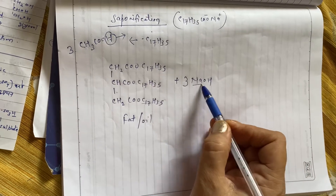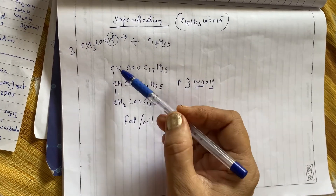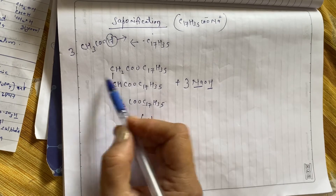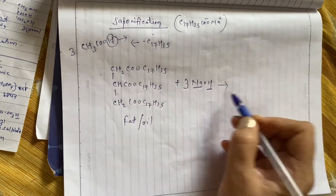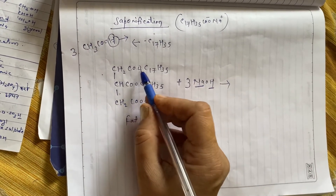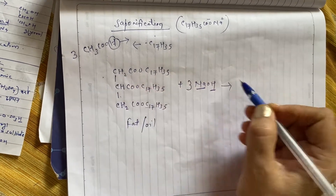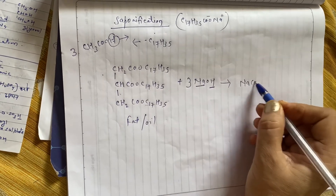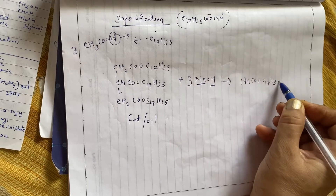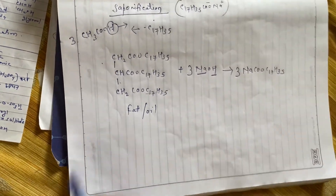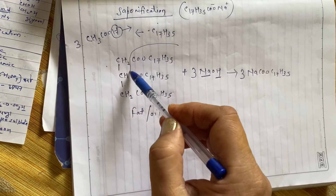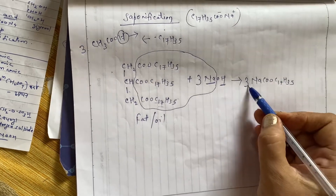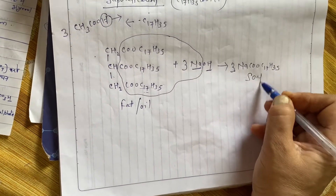Jab dono reaction karenge to dekho: teen sodium hai aur teen OH group hai. Yeh OH group aakar ek idhar, ek idhar, ek idhar lug jayega, aur woh glycerol mein convert ho jayega. Aur jo remove hua hai uski jagah sodium lug jayega. To bana kya? COO C17H35 aur sodium — aise teen particles. Yeh kahlayega tumhara soap.